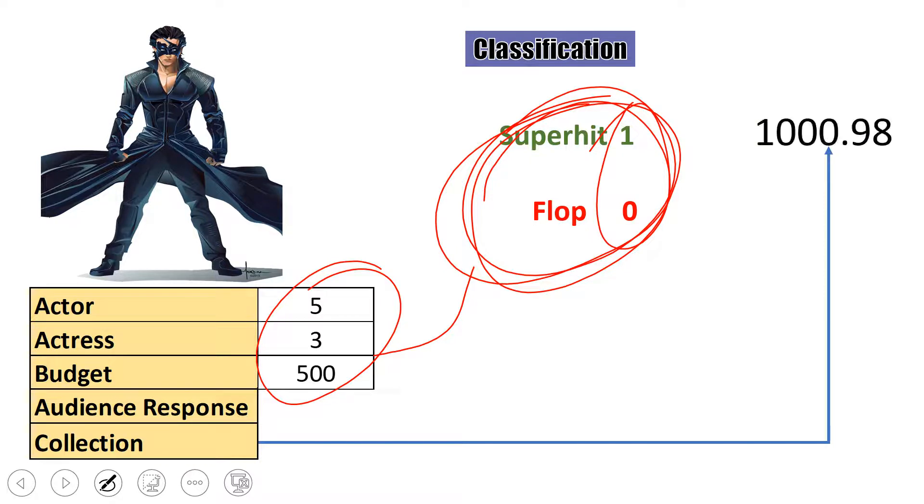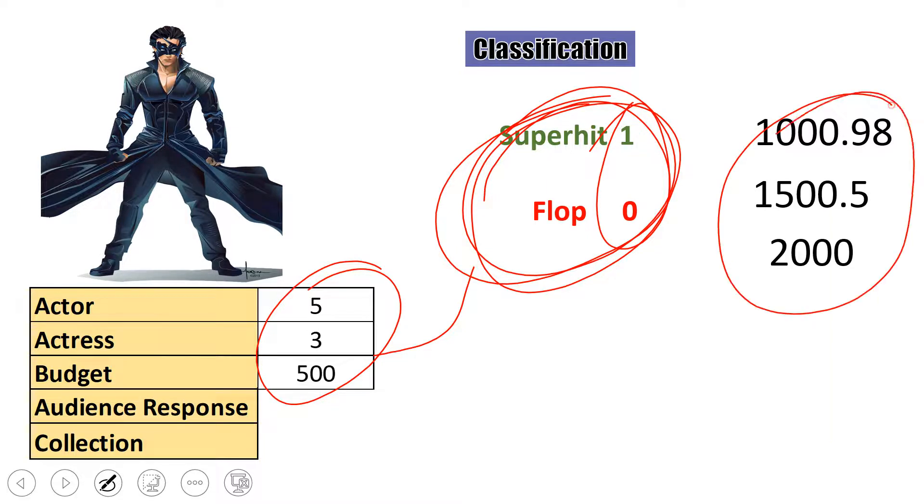Whether it will be 1000 crore, 1500 crore, or 2000 crore. So these values, if you see, these are in continuous numbers. So if you are trying to do any prediction which will produce the output in continuous numbers, that is nothing but regression.